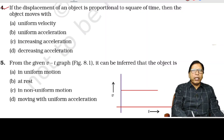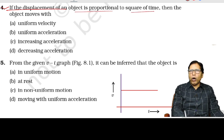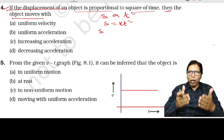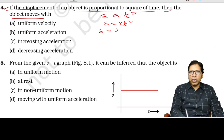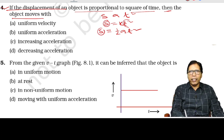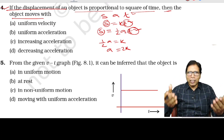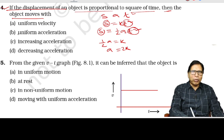Question number 4: if the displacement of an object is proportional to the square of time, then the object moves — displacement s is directly proportional to t², so s = kt². We know that when a particle moves with constant acceleration from rest, s = ½at². Comparing, ½a = k, so a = 2k. Since k is constant, 2k is also constant, therefore the acceleration of the particle is constant. Option B is correct.